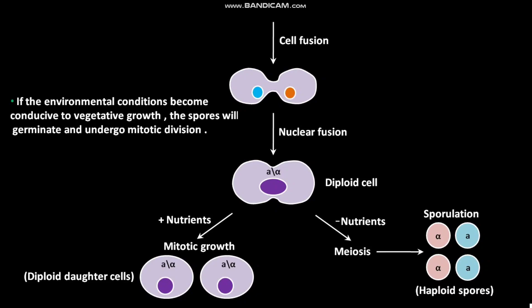If the environmental conditions become conducive to vegetative growth, the spores will germinate and undergo mitotic division.